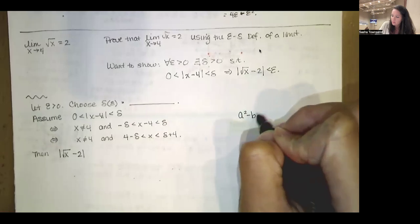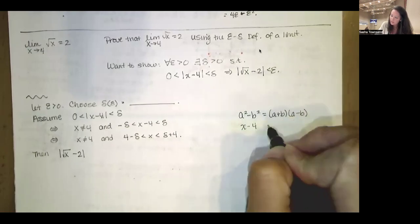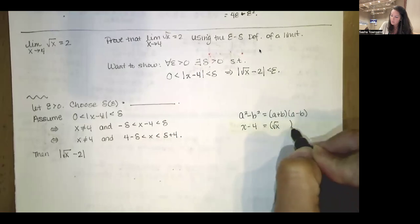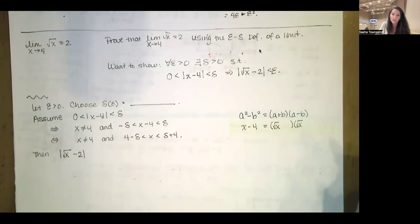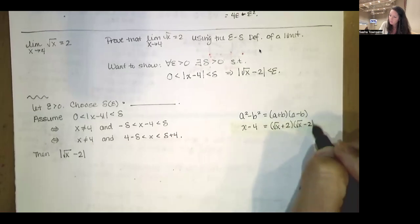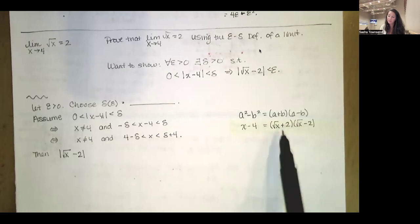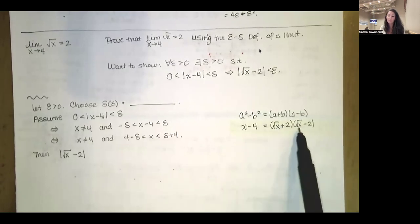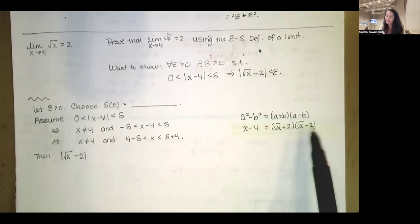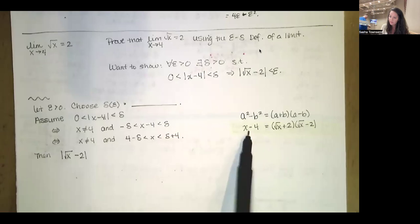I want to relate the absolute value of the square root of x minus two to the absolute value of x minus four, which we know to be less than delta. Notice that x minus four can be thought of as a difference of squares: a squared minus b squared factors as (a plus b)(a minus b). Using square root of x as a and 2 as b, x minus four equals (square root of x plus 2)(square root of x minus 2). You can verify by FOIL: first times first is x, the outer and inner terms cancel, last times last is negative four.